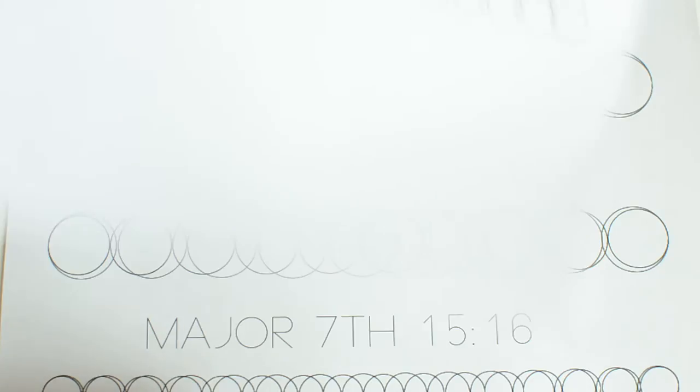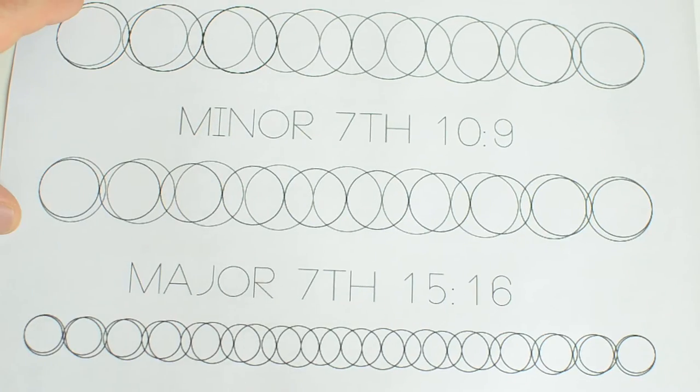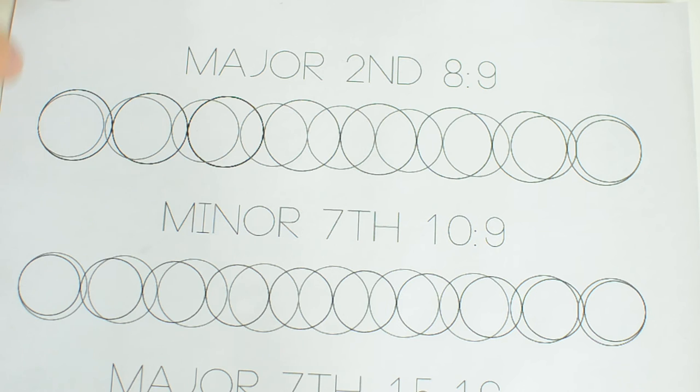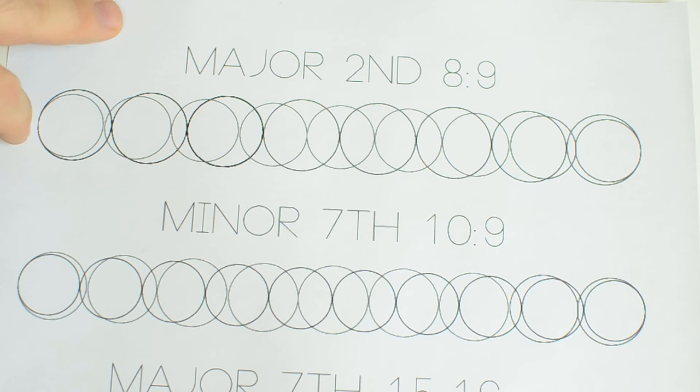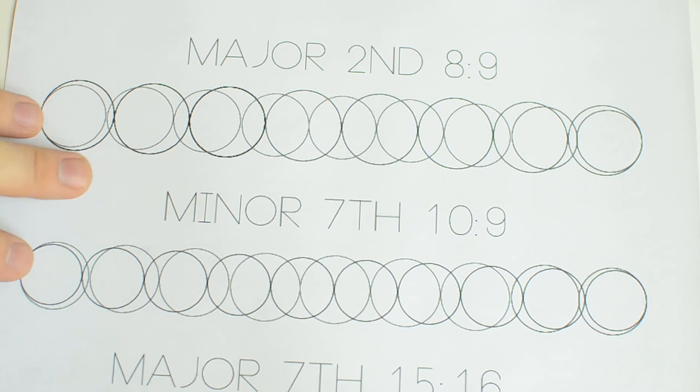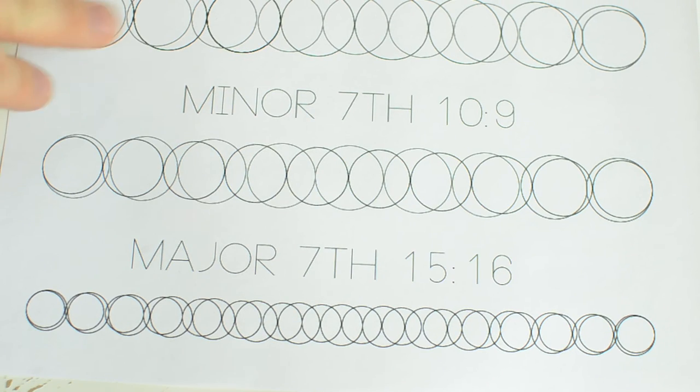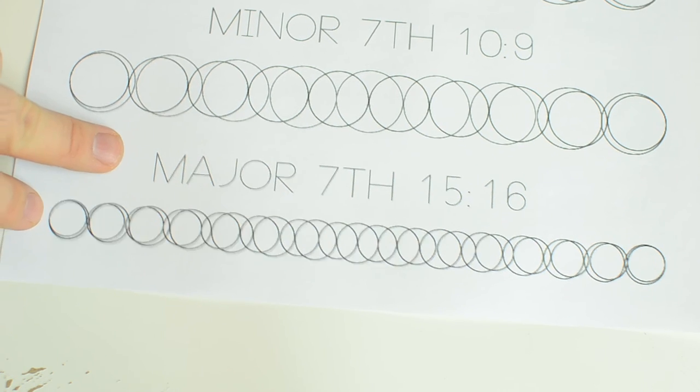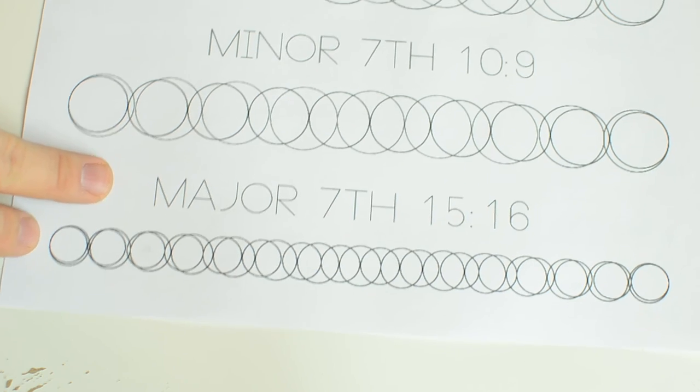And then I have a few other ratios here. The major second, which is the fifth of the fifth, it's just SO upon SO, is an eight to nine ratio. The minor seventh, which is a fifth plus a minor third, so it's a SO plus ME, which is the minor third, is a ten to nine ratio. And the major seventh, as we said, is a fifteen to sixteen ratio.